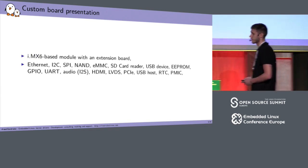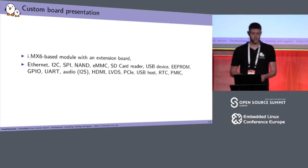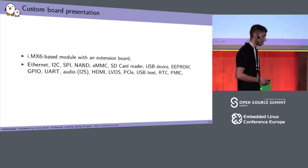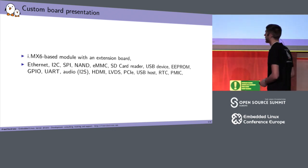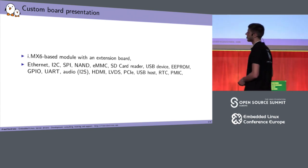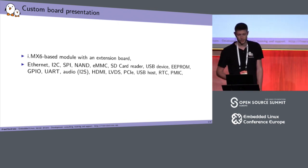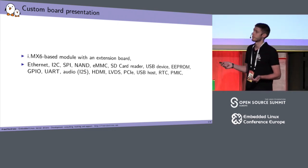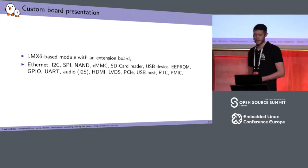A little presentation on the custom board I ported uBoot and Linux on. It's an IMX6 solo or quad — we have two boards, a module with an extension board. On this product you have Ethernet support, I2C, SPI, NAND, eMMC, SD card reader, USB device, EEPROM on I2C, GPIO, UART, audio on I2S, HDMI, LVDS, PCIe, USB host, RTC, and PMIC. Most are supported in Linux and some are supported in uBoot. The client didn't want all the features, so I'll present how I added support and how easy it was.